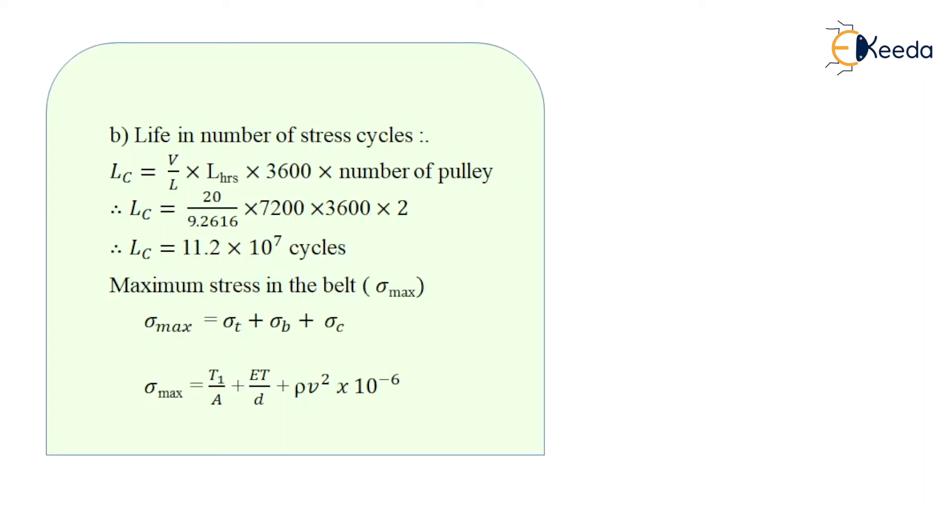Next, life in number of stress cycles is given by the formula LC is equal to V upon L into life in hours multiplied by 3600 multiplied by number of pulleys. So LC is equal to 20 upon 9.2616 multiplied by 7200 multiplied by 3600 multiplied by 2. So I get the answer for LC as 11.2 into 10 raised to power 7 cycles.